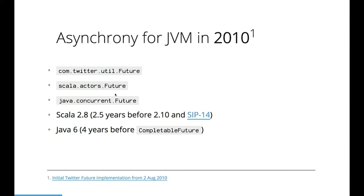Really dark times - summer of 2010, probably too early to talk about asynchrony. Scala was at 2.8 at that point, with essentially zero people using it in production. It was two and a half years before SIP 14 happened - known as Scala Futures and Promises in Scala 2.10 - and even four years before the actual Java completable future happened. So we made an executive decision to roll our own thing, known as Twitter future.